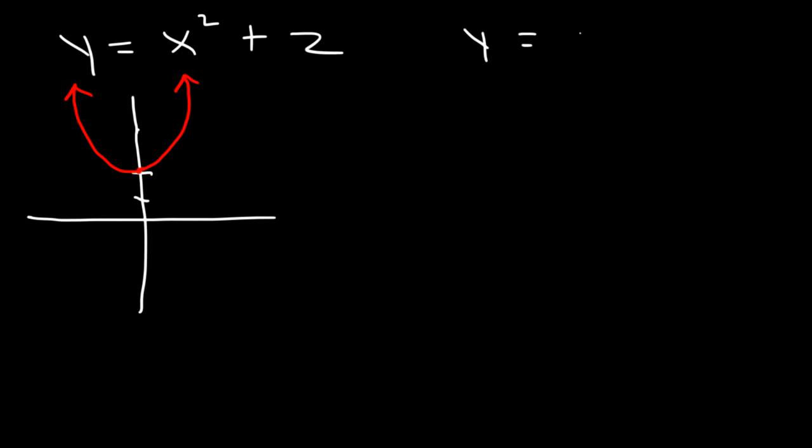Let's say if we have y equals negative x squared minus 1. Minus 1 is the vertical shift, so it shifts down one unit. So it's going to start at negative 1. And because there's a negative in front of the x squared, it's going to open downward.